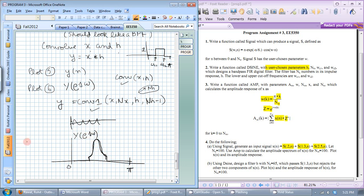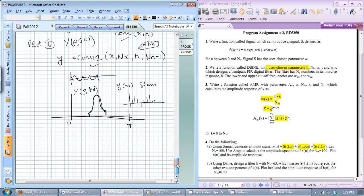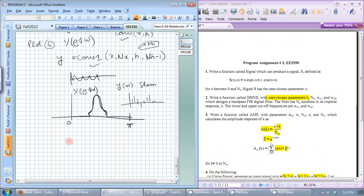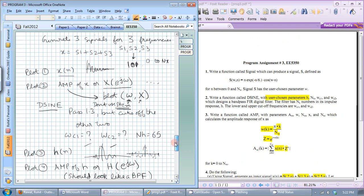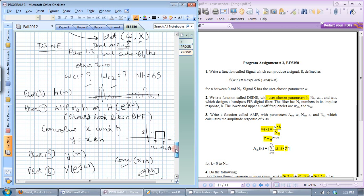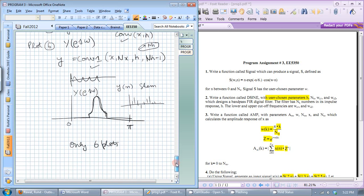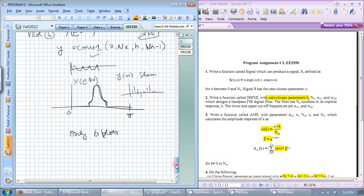And again make sure you use the plot function not the stem function for any of these plots. So y of n would be a stem plot something like that but the Fourier transform make sure you use the plot function. And ideally your submission should only have 6 plots which I have defined here: x, the amplitude response of x, h, amplitude response of h, y and that's it.